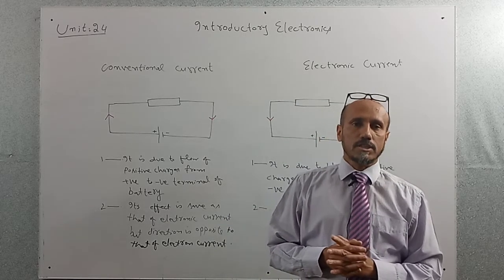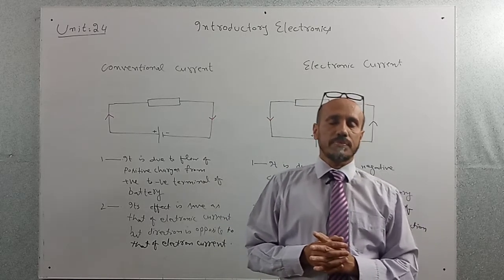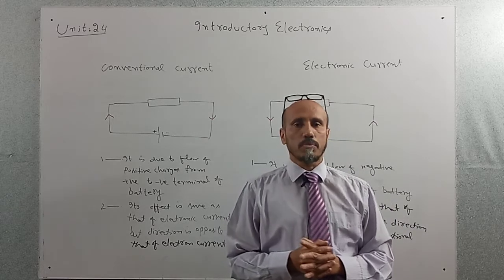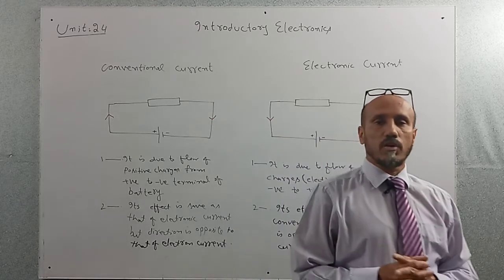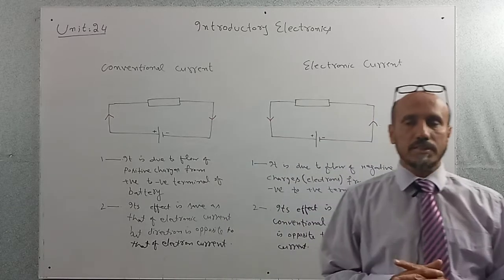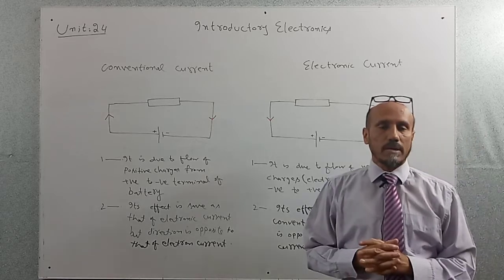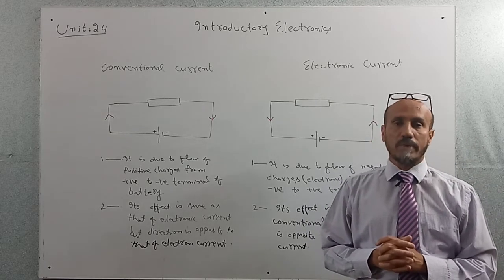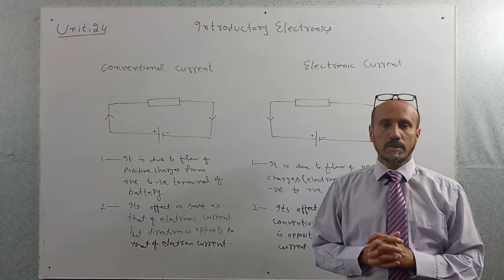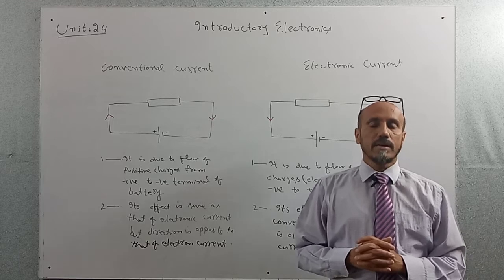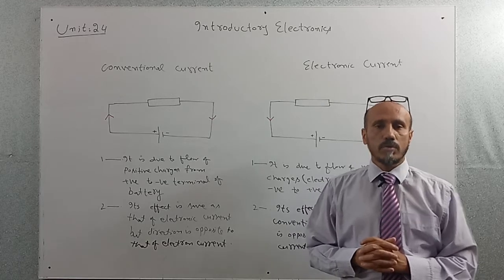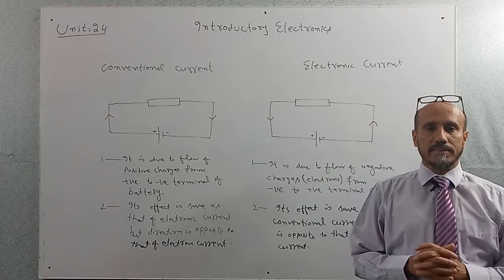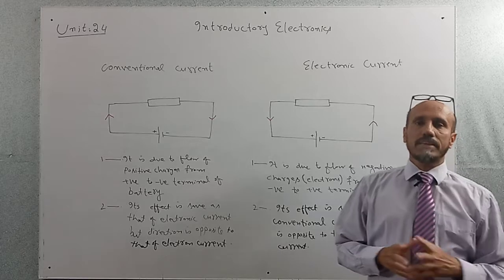But later on, scientists proved that theory wrong. They said it is not possible that current flows due to the flow of positive charges, because current can pass through metals, and metals carry free electrons or mobile electrons. So they concluded that current flows due to the flow of negative charges, that is electrons.